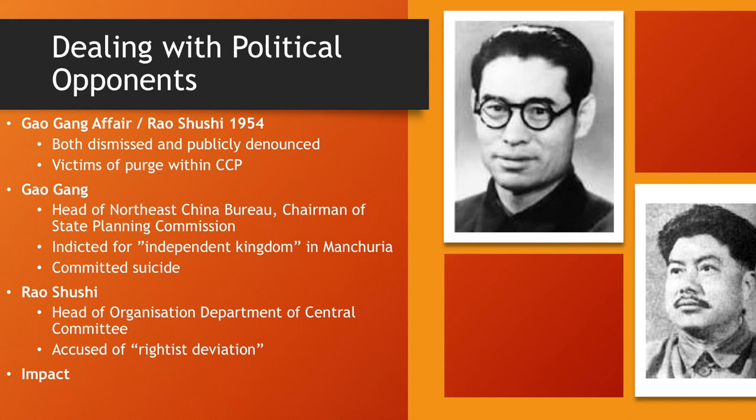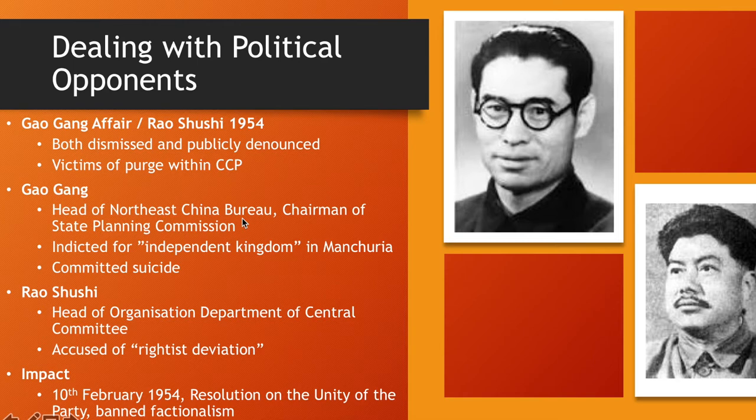In 1954, legislation called the Resolution on the Unity of the Party banned factionalism. These two individuals were accused of creating factions within the party, and this made opposition to Mao's policies more difficult to organize.